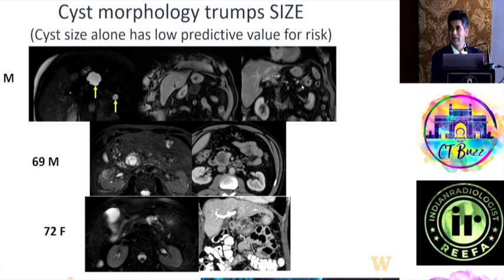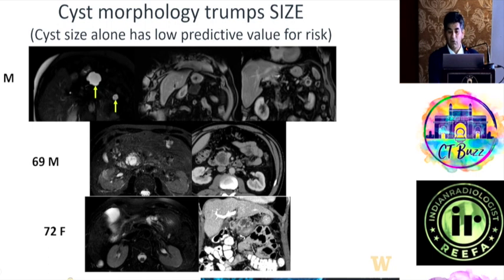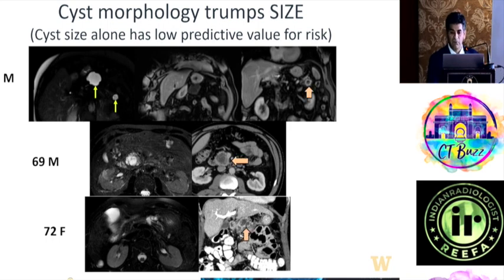Another case shows a 3 cm lesion — you focus on size, but the thick irregular margin is more important. And another: 3 cm side branch IPMN less than 3 cm, but look at the thick enhancing wall. Morphology trumps size. Always look at morphology first; only in the absence of concerning morphology and symptoms does size come into the picture.